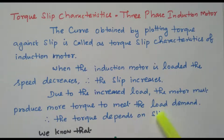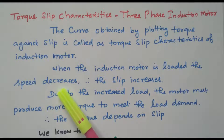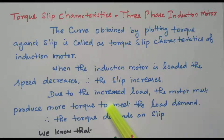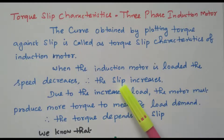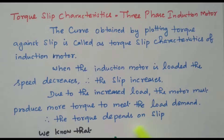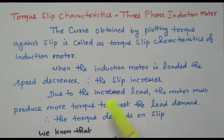But due to increased load, the motor must produce more torque to meet the load demand. So while loaded, speed decreases, but the motor will try to meet the required demand by producing more torque. So as slip increases, torque also increases — torque depends upon the slip. When loaded, speed decreases, slip increases, and at the same time, in order to meet the load, torque also increases. All are interrelated.